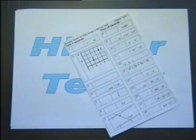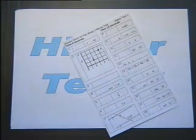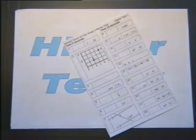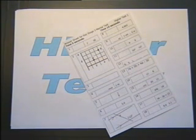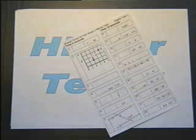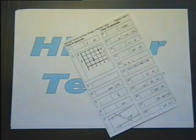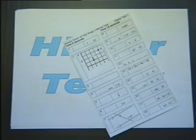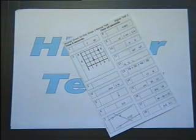Number 8. Write 4.865 to 1 decimal place. For the next group of questions you will have 10 seconds to work out each answer and write it down.